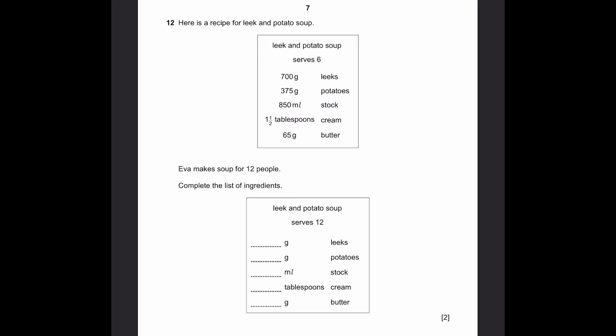Question 12. Here's the recipe for leek and potato soup. So the recipe is over here. Eva makes soup for 12 people. Complete the list of ingredients. So 12 people is 6 into 2. This one serves 6. So you just multiply everything by 2 to get the number for 12. 1,400 grams for leeks. 750 grams for potatoes. 8 into 2, 1,700 ml stock. 3 tablespoons cream. And 130 grams butter.